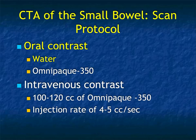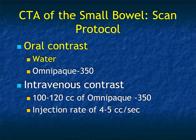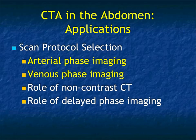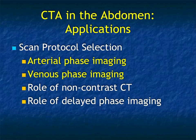Typically 100 to 120 cc of Omni 350 is good, depending on the patient's size, and an injection rate around 5 cc per second is truly ideal. Fast injection is very critical for good opacification. For bowel ischemia or obstruction, you can get by with a venous phase at about 70 to 80 seconds, but if you really want a good look at the mesenteric vessels, you need dual phase imaging — arterial at about 30 to 35 seconds and venous at about 70 to 80 seconds. I don't find any role for non-contrast CT, and I haven't found any great advantage for delayed phase imaging either.